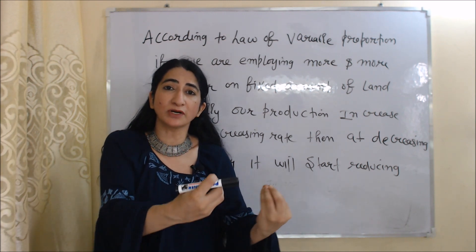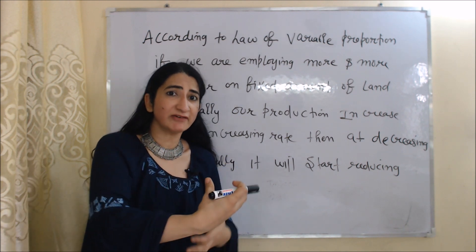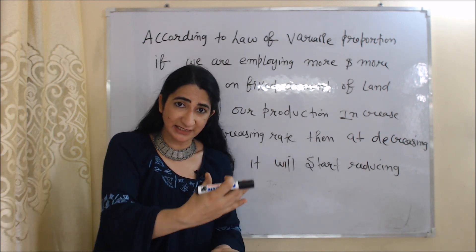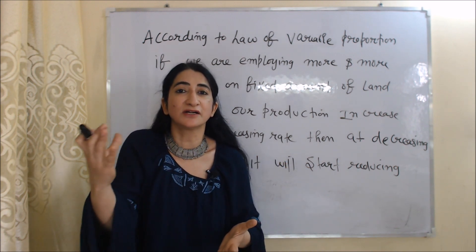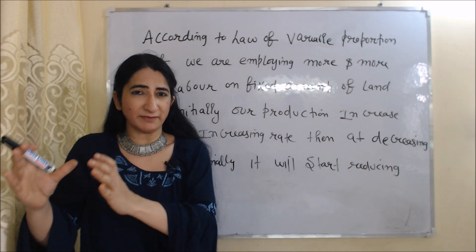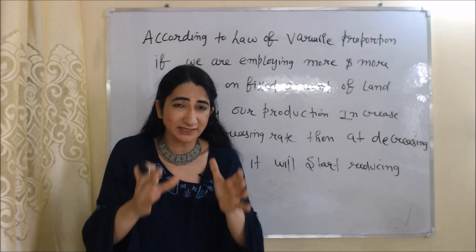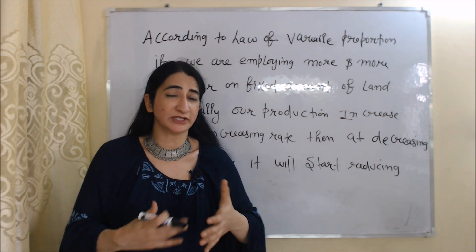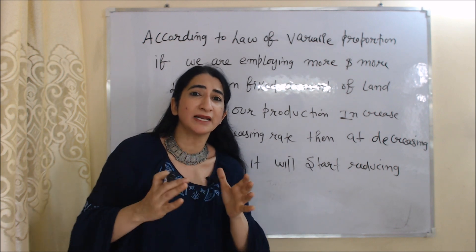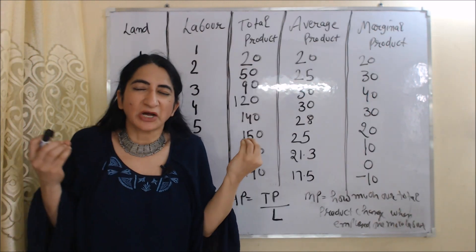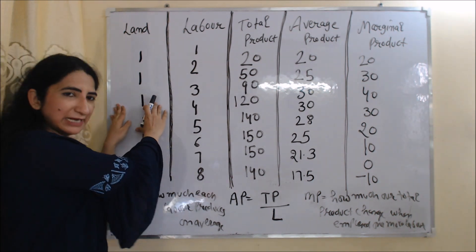So according to the Law of Variable Proportions, if we employ more and more labor on a fixed amount of land, then initially our production increases at an increasing rate, after that at a diminishing rate, and finally it starts reducing.